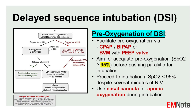If intubation is still needed, push paralytic, keep apneic oxygenation via nasal cannula, then intubate, confirm tube placement, and start post-intubation sedation. If at any point the oxygen saturation drops below 95% despite non-invasive ventilation, proceed directly to intubation.